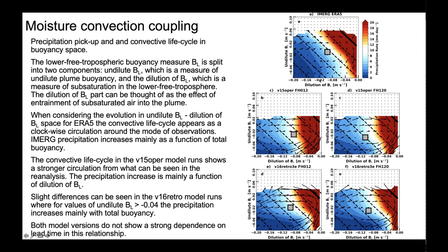Another aspect of moisture-convection coupling is looking at precipitation pickup and the convective life cycle in buoyancy space, based on work that Brandon Walding has been doing. In observations — IMERG and ERA5 — you see evolution around a mode in this phase space. Both models are able to have the correct evolution, but when you look at the shading — precipitation rate based on buoyancy — version 15 has the precipitation pickup going essentially from left to right without following the lines of constant buoyancy. So the model only cares about the dilution component of buoyancy and not total buoyancy, which differs from ERA5 and IMERG.